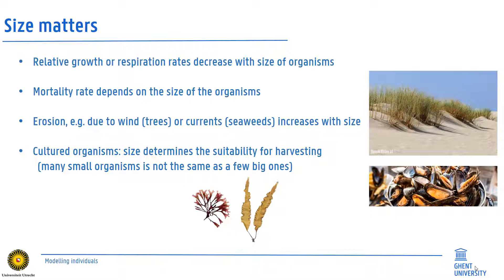Also, when feedbacks with the environment are present, size can be very important. Erosion by wind, for instance, is larger around larger species than small ones. Conversely, larger grass tussocks — for instance marram grass — trap more sand than the smaller ones and therefore contribute more to dune formation than the smaller ones.